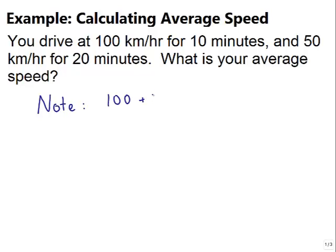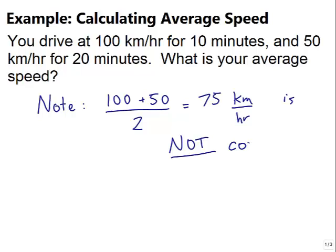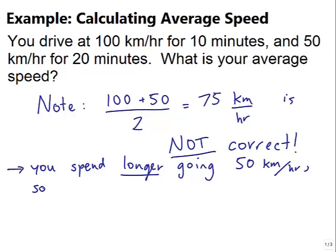Note that 100 plus 50 over 2 is 75 kilometers per hour is not correct because you're spending longer going at 50 kilometers per hour than 100, so it gets weighted more.